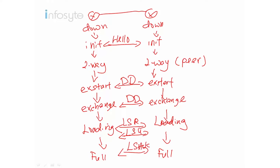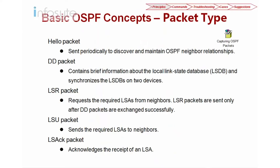So these are the five different packets sent between two routers: Hello, Database Description, Link State Request, Link State Update, and Link State Acknowledgement. These are the five different packet types in OSPF.